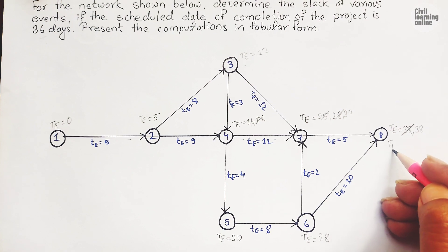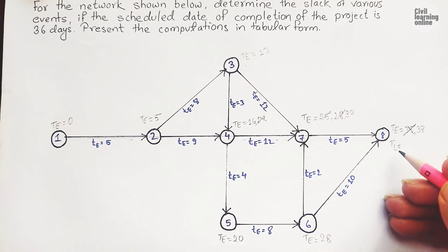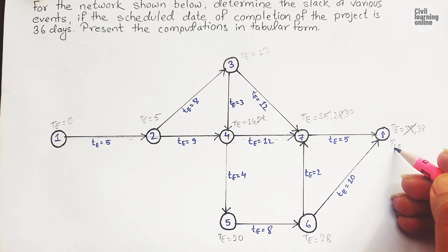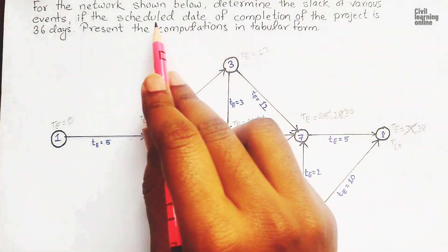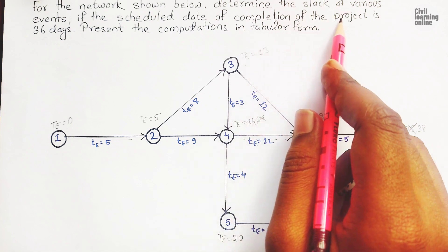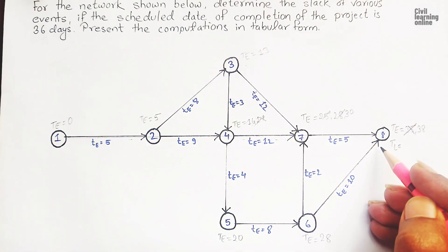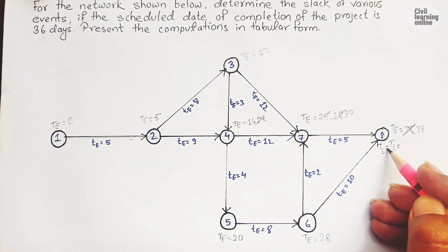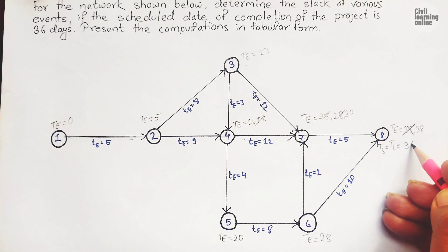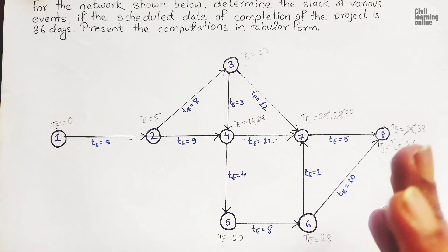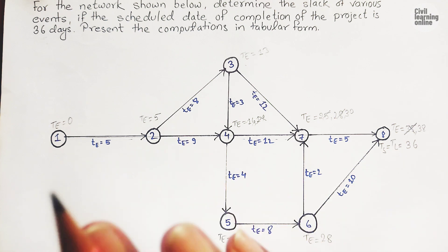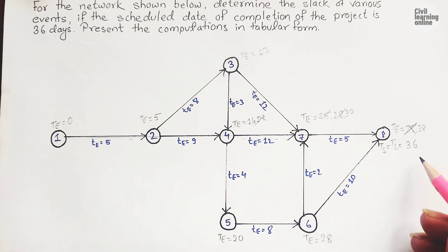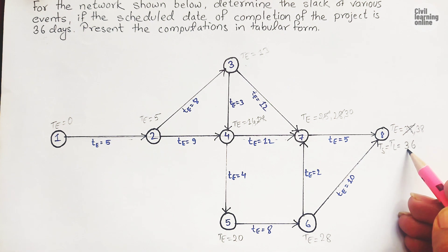Now it is time for TL, the latest allowable expected time. TL is going to be thirty-six because we are already provided that the scheduled date of the completion of the project is thirty-six days. So here we have TS equals TL equals thirty-six, not thirty-eight. In the previous numerical we took TL equals thirty-eight because there was no extra information about TL, but here we do have it. So we have to take TL equals thirty-six.